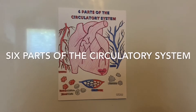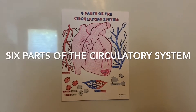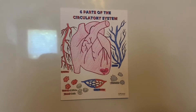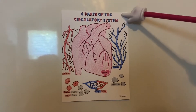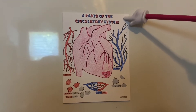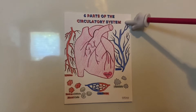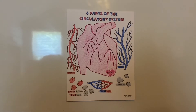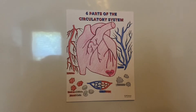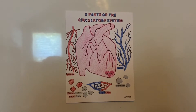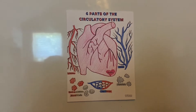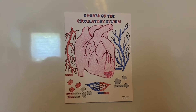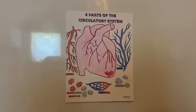Hi, CC friends. Today, we're going to learn about six parts of the circulatory system. This song is set to the tune of 'It's Beginning to Look a Lot Like Christmas.' I got the song from CC Connected. This is not a Miss Gatti original, but please sing along with us.